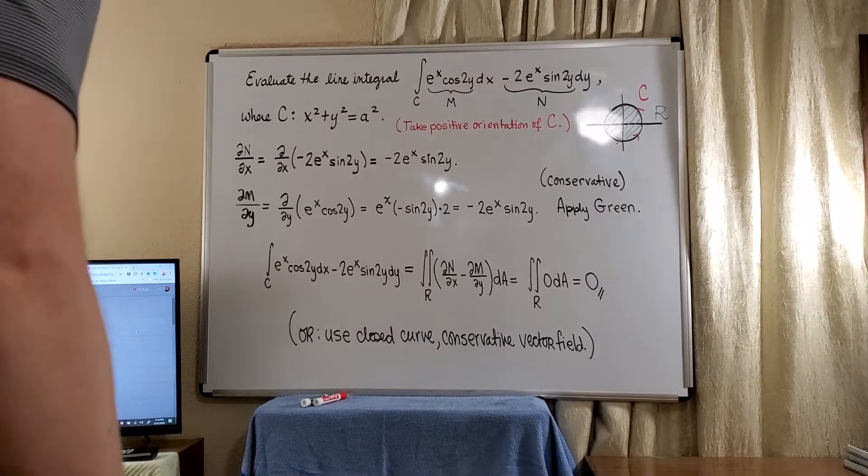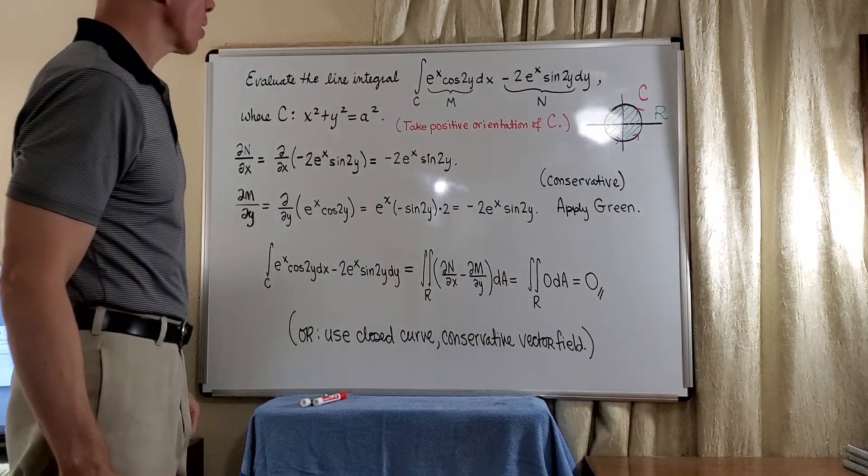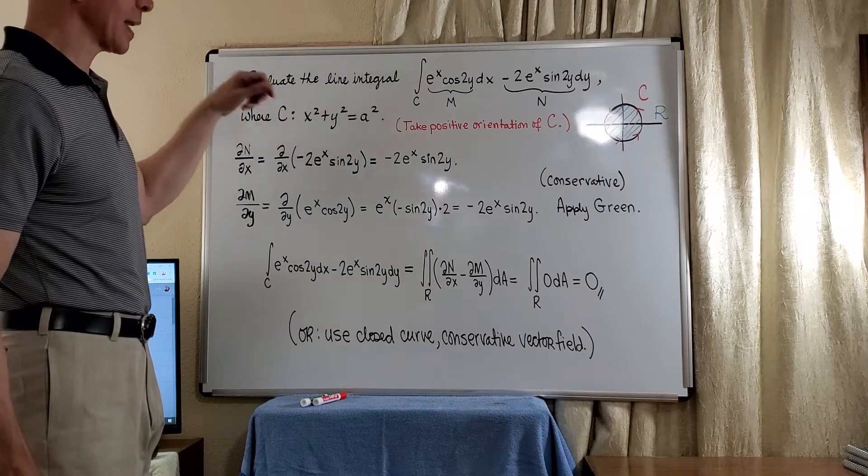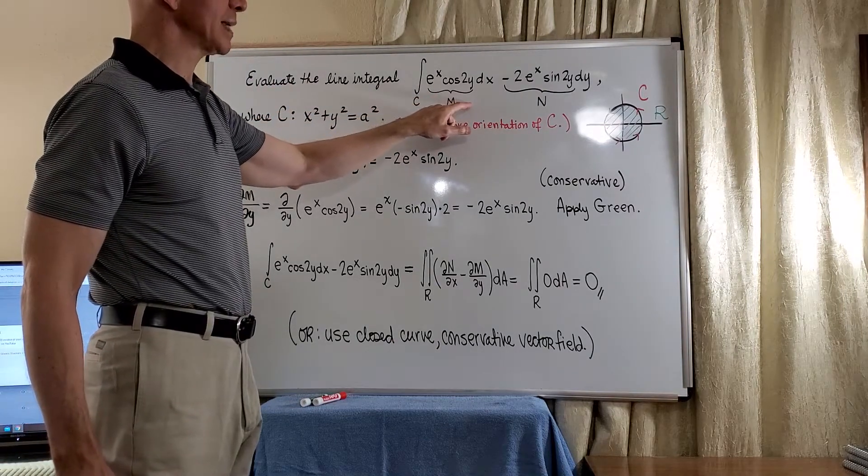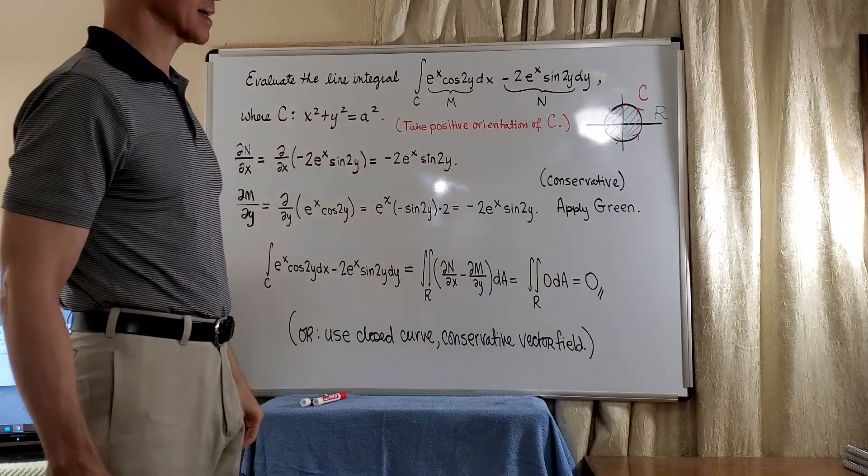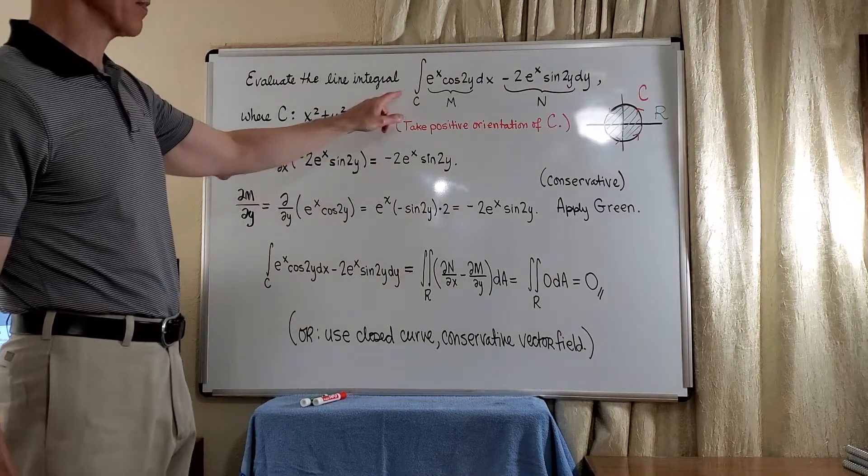Let's look at another example involving Green's Theorem. What we want to do is evaluate the line integral e to the x cosine 2y dx minus 2e to the x sine 2y dy about the curve C.